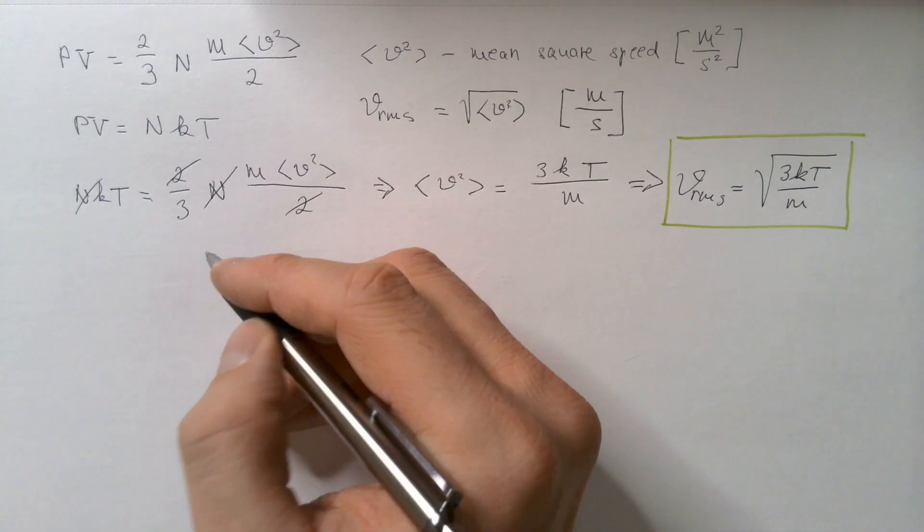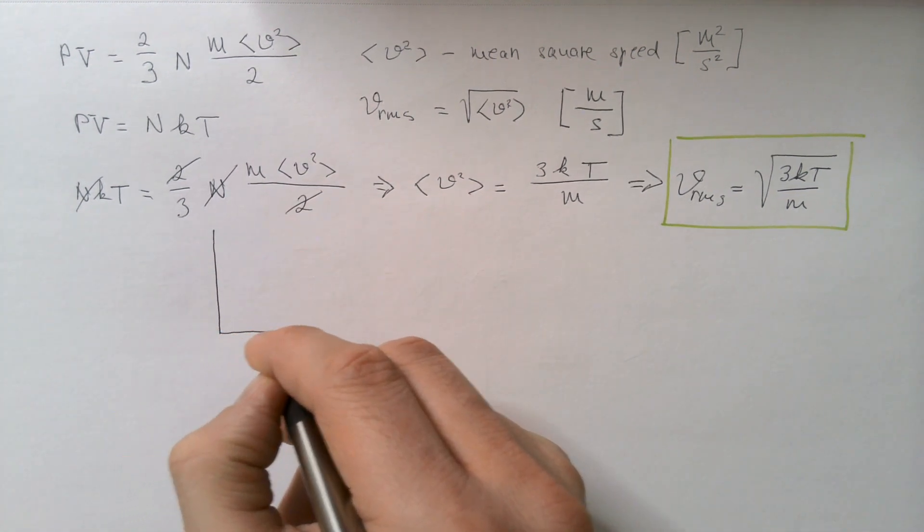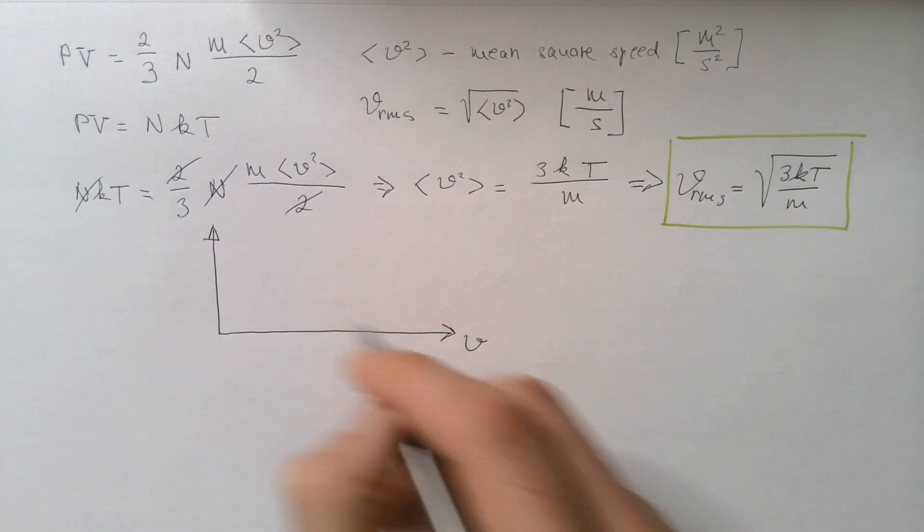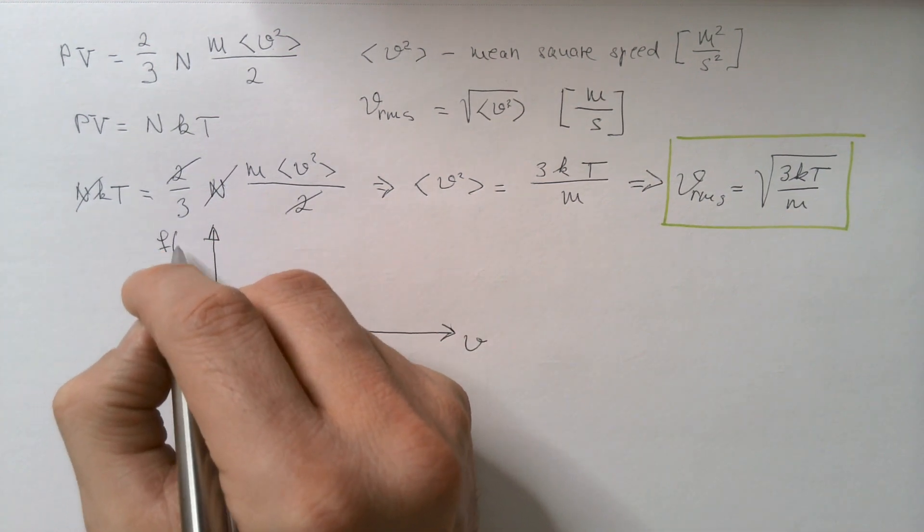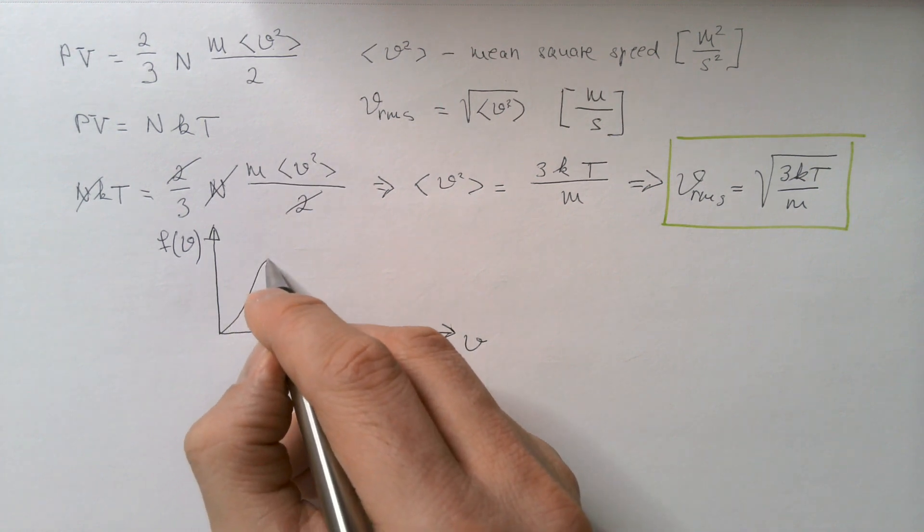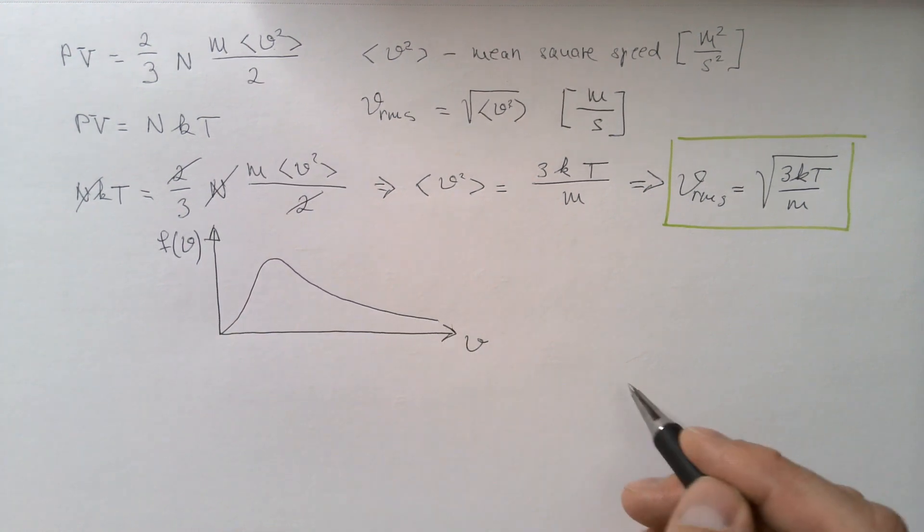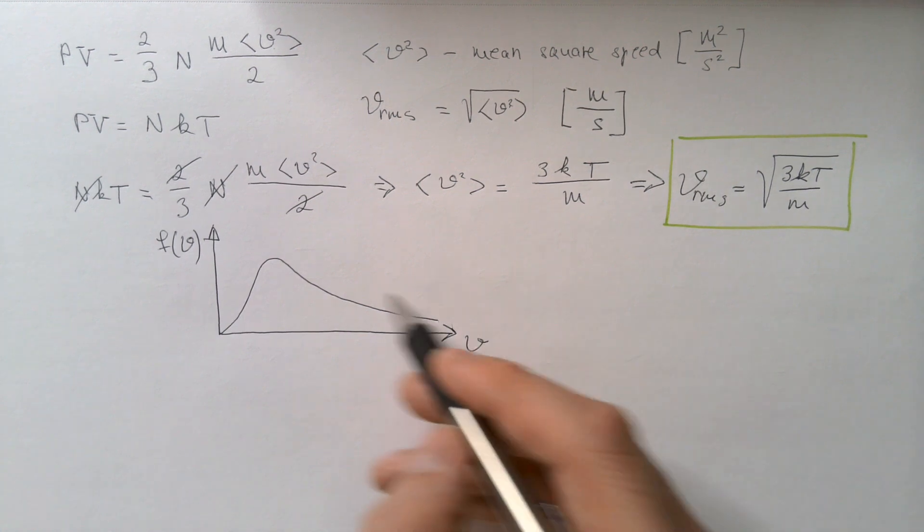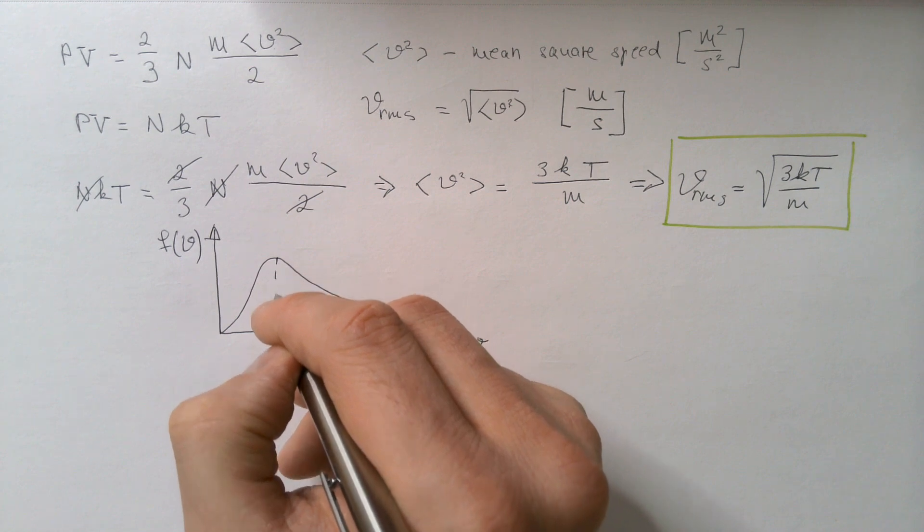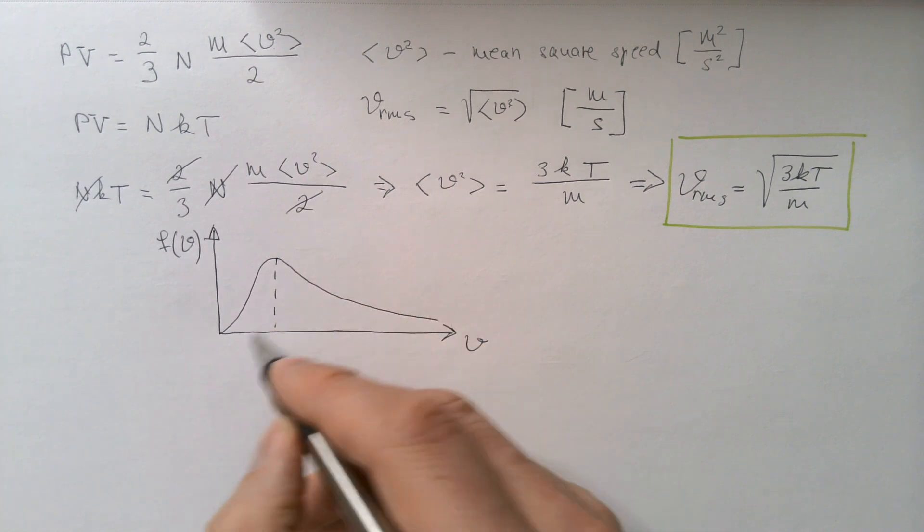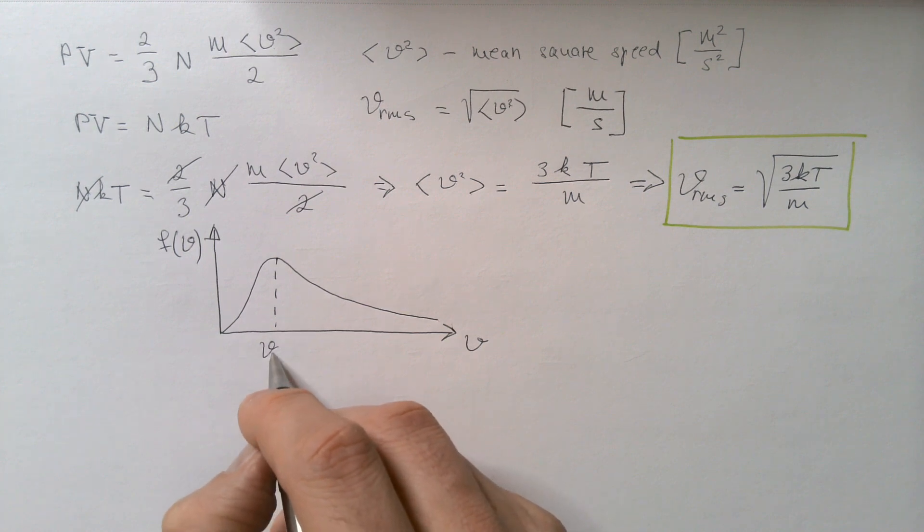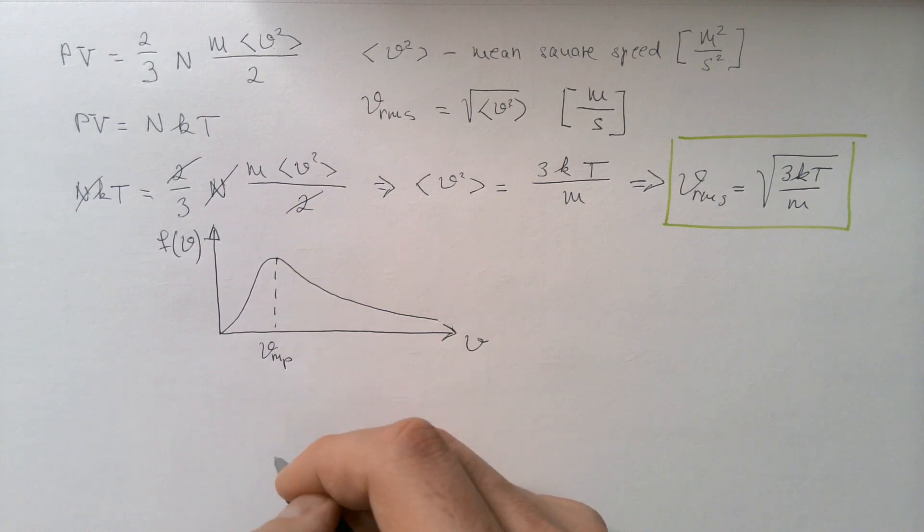If we look into Maxwell Boltzmann distribution of speeds, where here is V, and here is probability density function of V, remember now that this distribution function is positively skewed. In previous video, we determined this speed, which is the most probable speed, or mode speed, VMP, most probable speed.